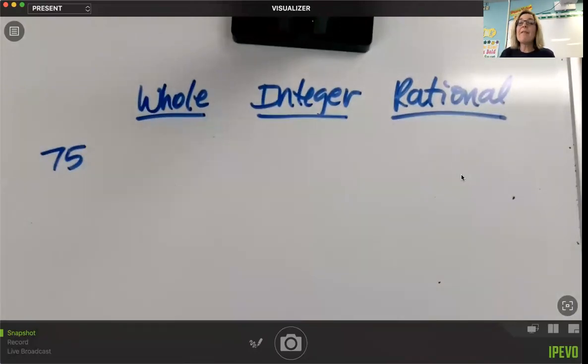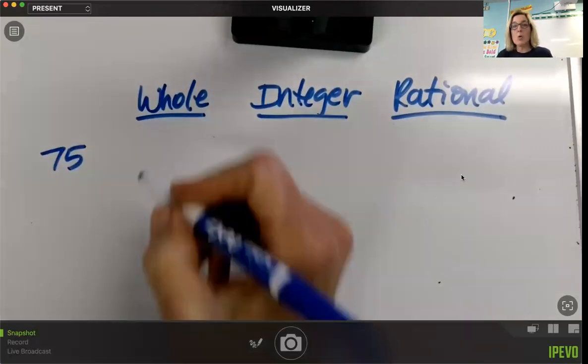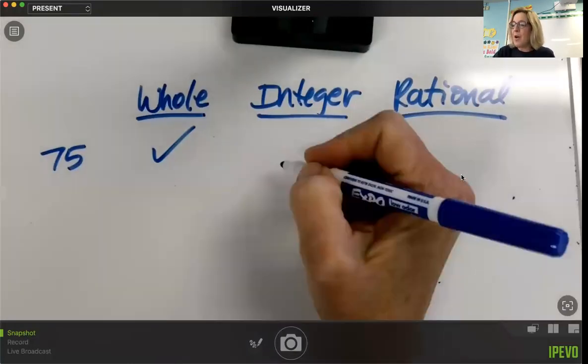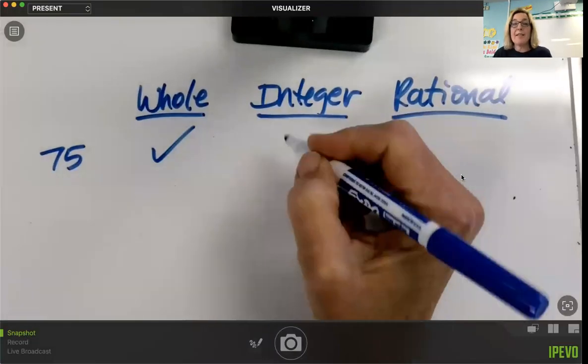So is 75 a whole quantity? Yeah, it is. It is a whole quantity. There's no parts. Is it an integer? Well, if you remember, integers are whole numbers and their opposites. It doesn't say whole numbers or their opposites. So it also classifies as an integer.